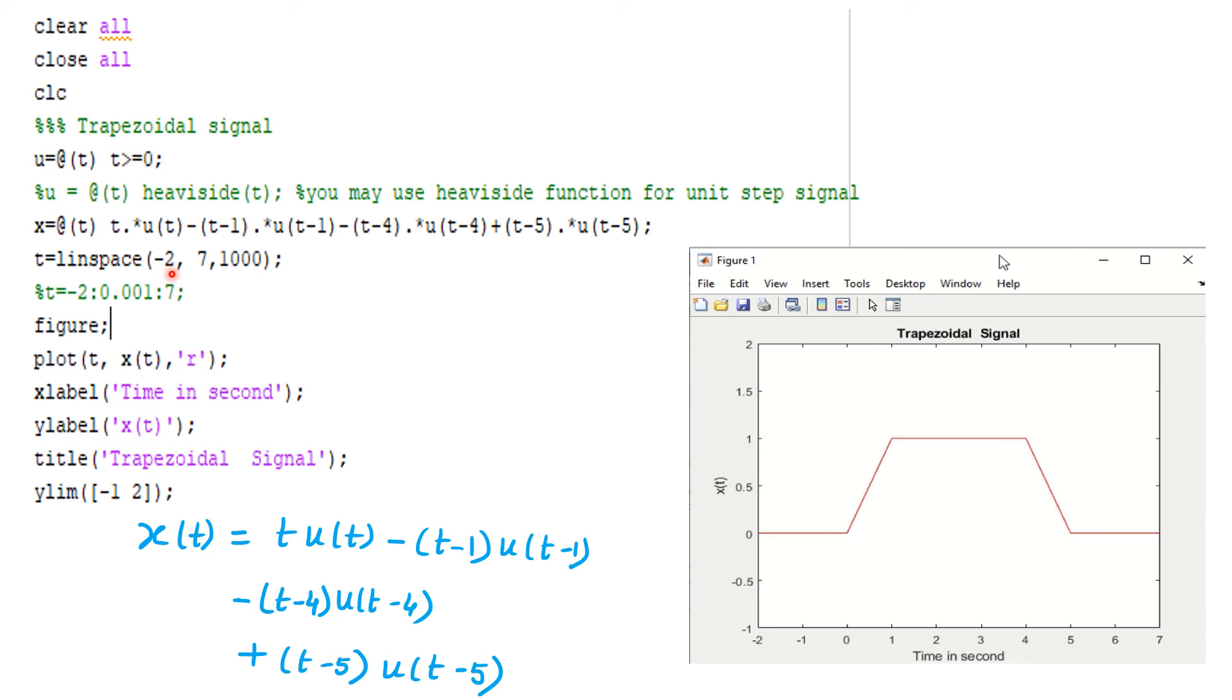Now we can define our time range. Suppose I want to get time range from -2 to 7, and in between I want to put 1000 points. So I can write in this way linspace function, linspace(-2, 7, 1000), implying that you will get 1000 points within this range.